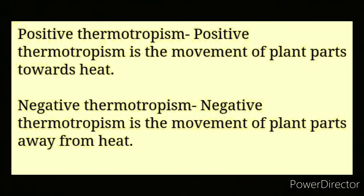Positive thermotropism is the movement of plant parts towards heat. And negative thermotropism is the movement of plant parts away from heat.